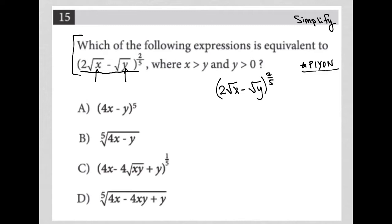So how do I plug in my own number? I make up values. Since x is under the radical, I want x to equal 9 because it's easy to take the square root of 9, and y equals 4. I initially considered x=4, but the question tells me x has to be greater than y, so I can't say x=4 and y=9. I'll just switch them around.